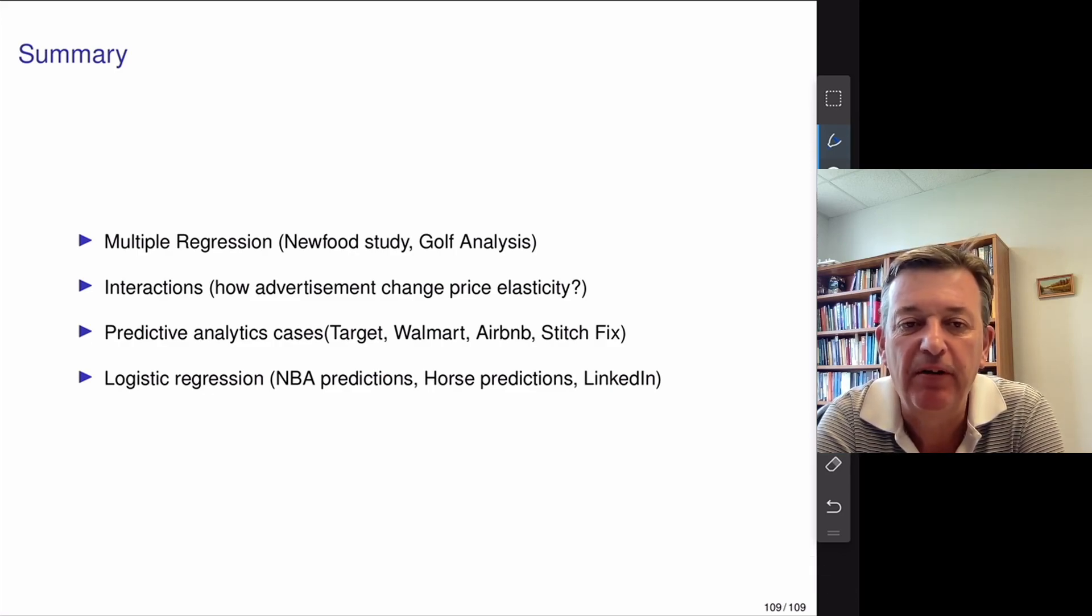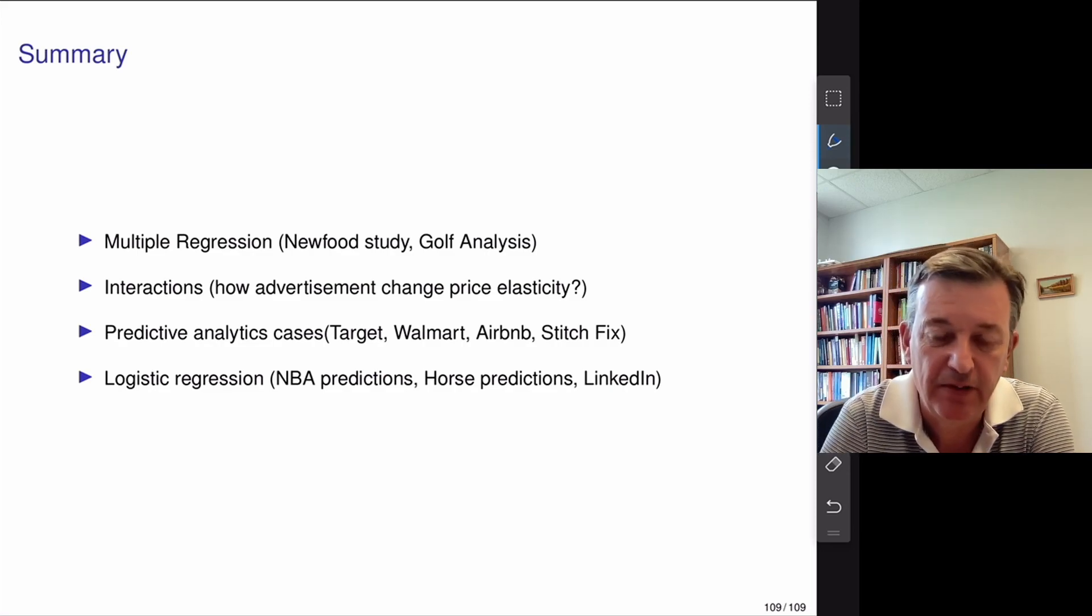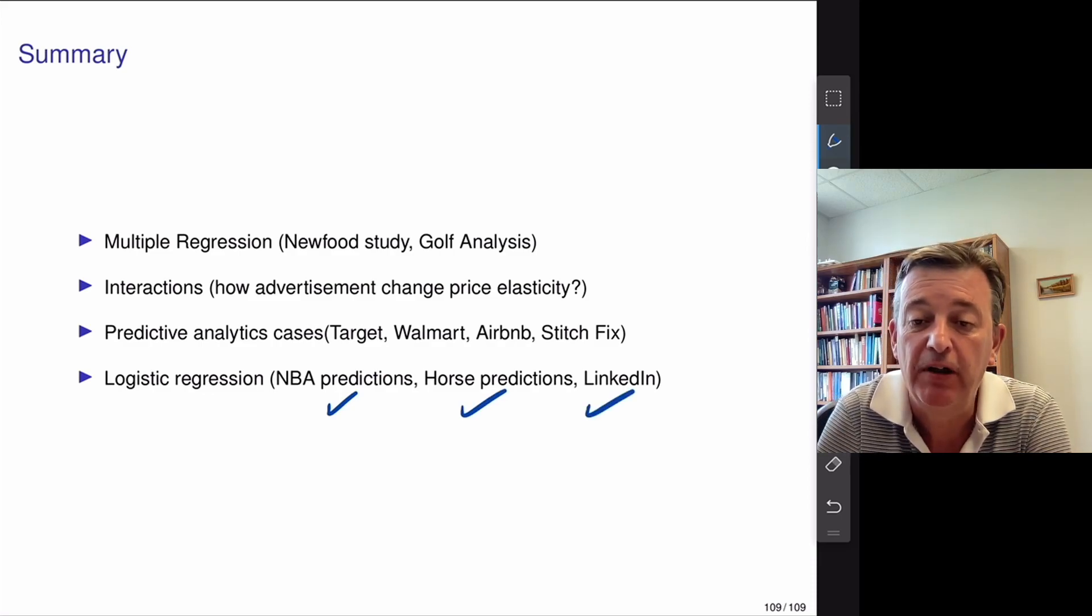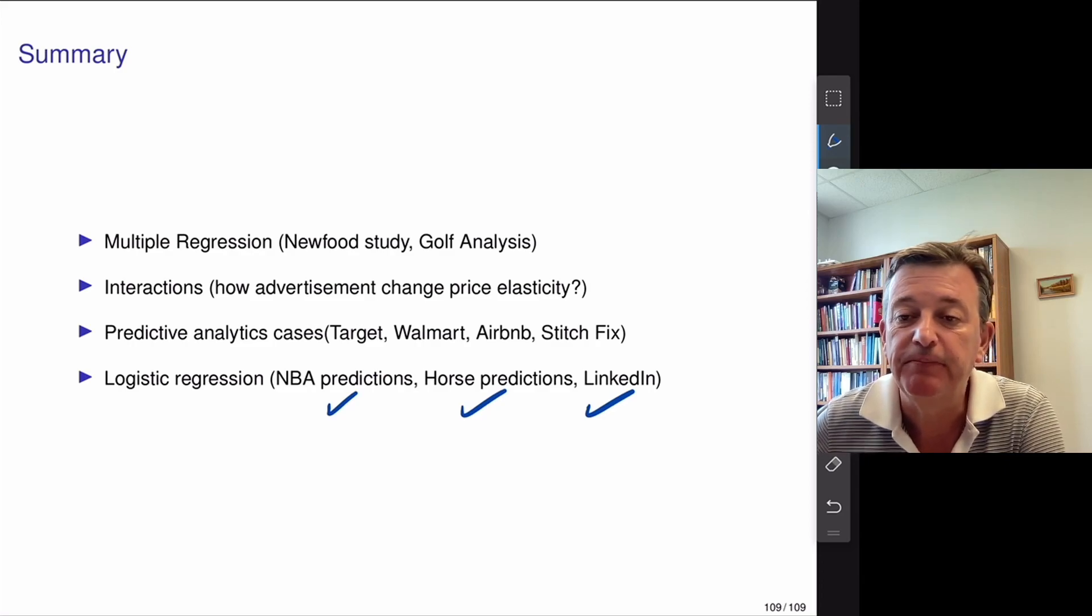Logistic regression is one of the very important fields because it does classification. So, don't forget all the examples we looked at, MBA predictions, horse racing prediction and our LinkedIn study are all logistic regression problems. OK, thank you. Thank you for listening. Next time will be artificial intelligence and deep learning.